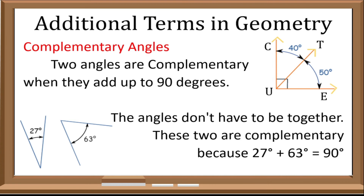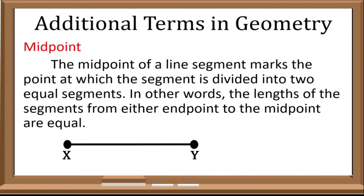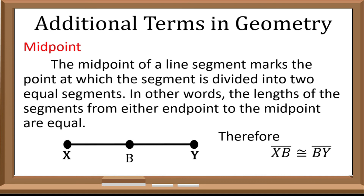Next term would be the midpoint. The midpoint of a line segment marks the point at which the segment is divided into two equal segments. In other words, the length of the segment from either endpoint to the midpoint are equal. For example, we have line segment XY, and we have point B. Given that point B is a midpoint, we can say that line segment XB is congruent to line segment BY.